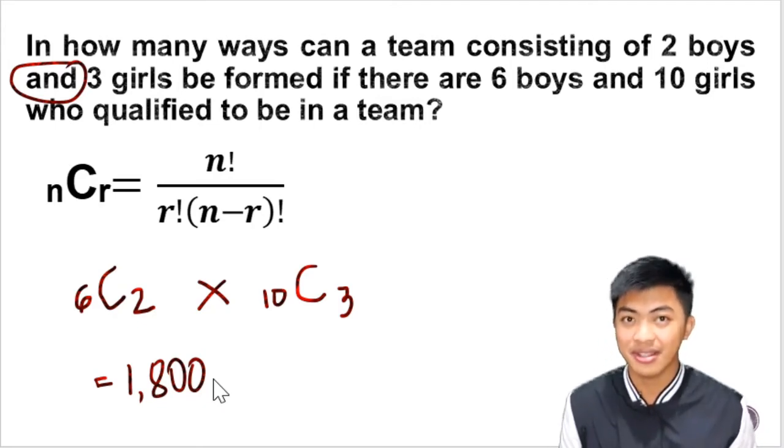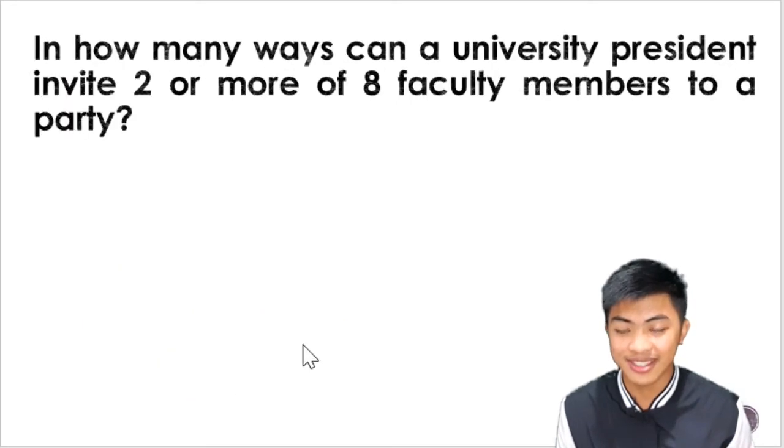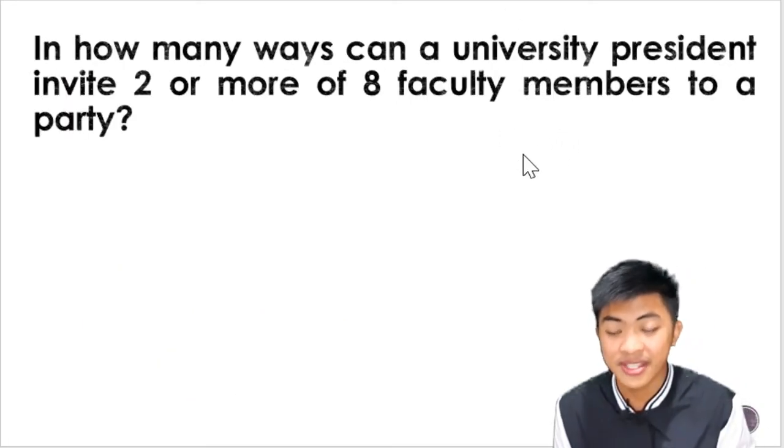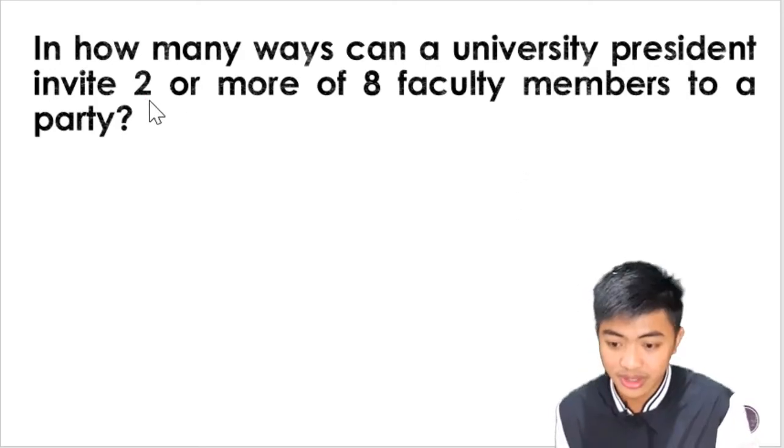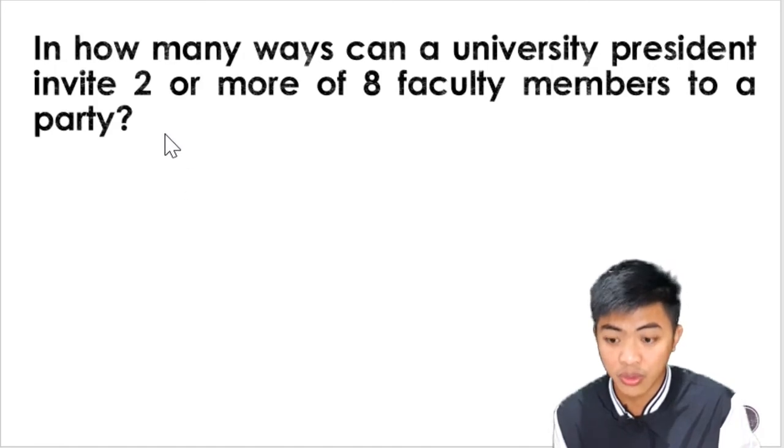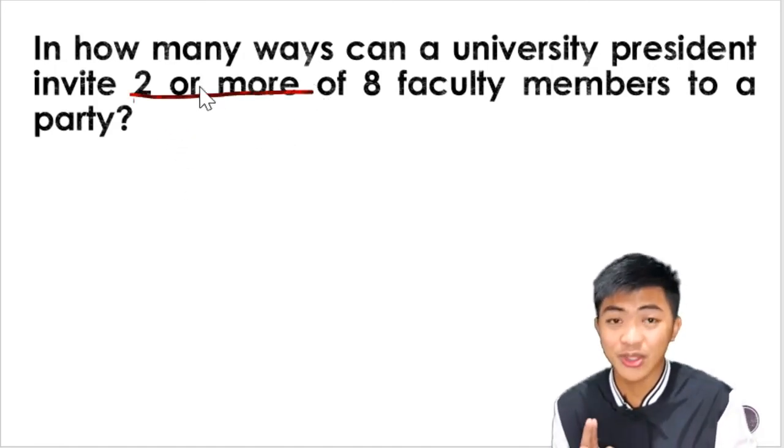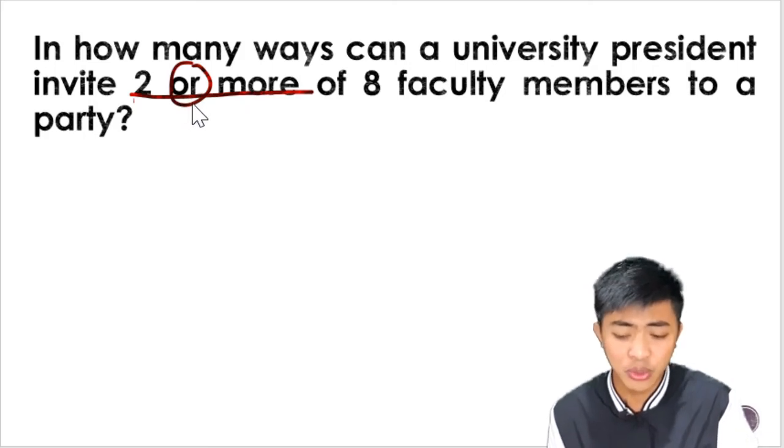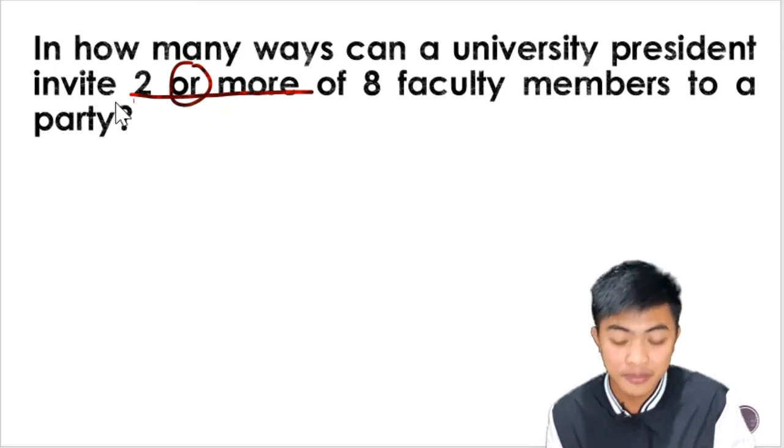If it's OR, you will be using addition. Let's look at this last example. In how many ways can a university president invite 2 or more of 8 faculty members to a party? There are 8 faculty members and we are going to be inviting 2 or more. When we say 2 or more, there's OR there, meaning addition will happen. You could invite two, three, four, or all of them to the party.